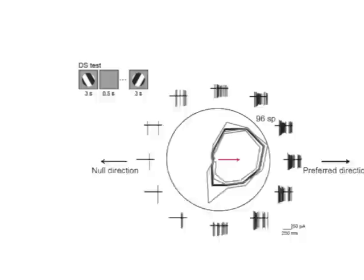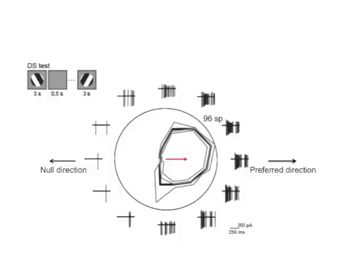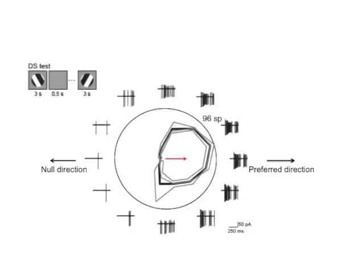Here is the typical tuning curve of a direction-selective ganglion cell. Responses to 3 repetitions of gratings are shown in gray and the average response is in black. The traces are examples of half a second activity recorded from the cell. The red arrow is the normalized vectorial summation.